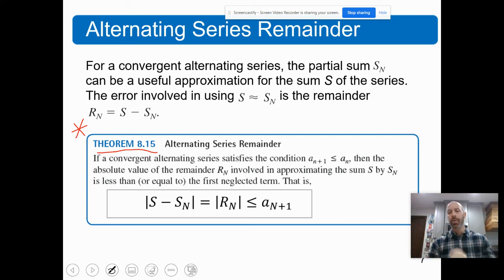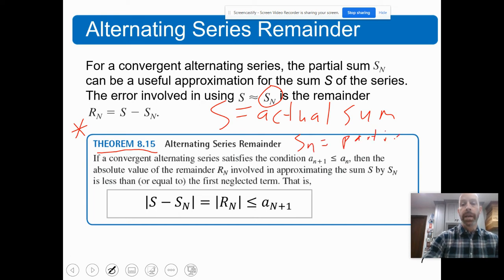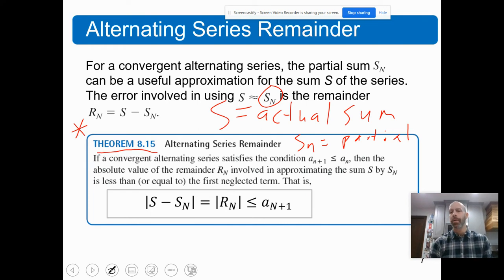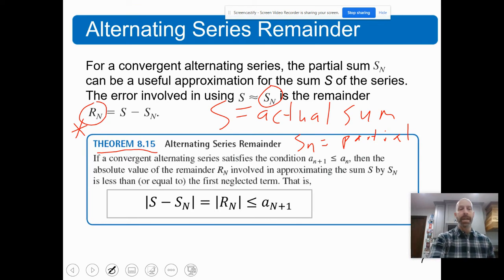S is the actual sum and S sub n is the partial sum. These two do not equal each other unless we've added infinitely many terms — so in most cases they are not equal. The remainder — the leftover part — equals the exact sum minus the partial sum. For example, if we're approximating pi using an alternating series, we might guess a little high, then a little low, getting closer and closer each time.